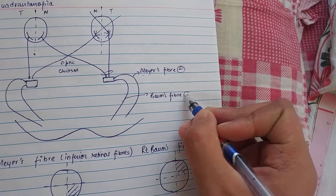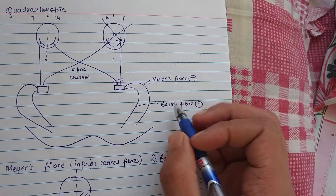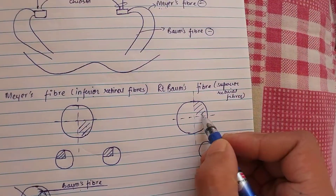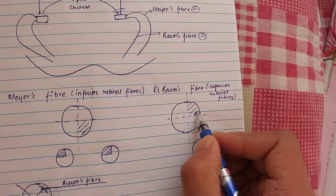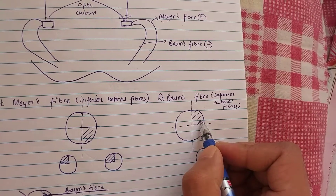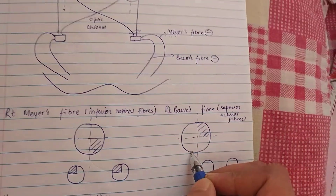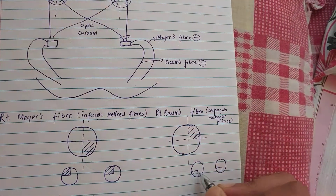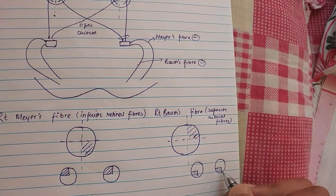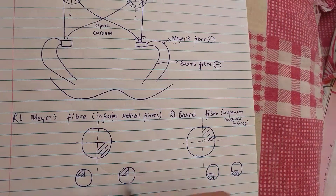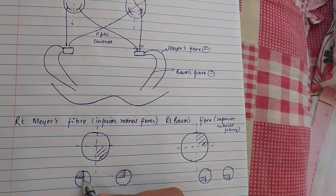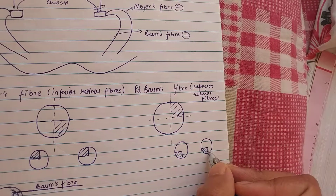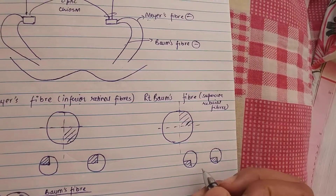In the case of right-sided Baum's fiber damage, the Baum's fiber carries the superior retinal fibers, which receive information from the inferior and left-sided quadrant. Therefore, the inferior left visual field will be lost. This is known as homonymous left-sided inferior quadrantanopia, whereas Meyer fiber damage produces homonymous left-sided superior quadrantanopia.